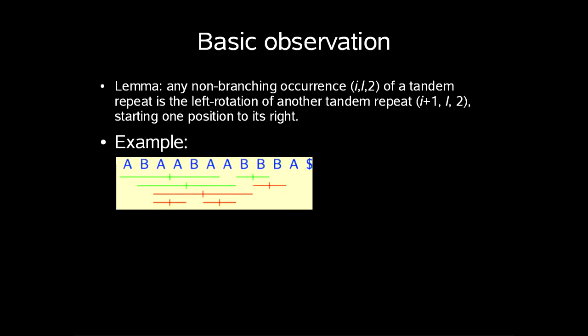Now let's look some more at our tandem repeats. A branching occurrence of tandem repeats in S is where the next letter of our tandem repeat is different from our first character in our repetition.